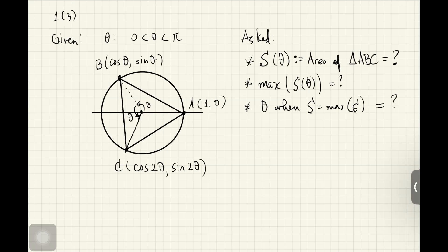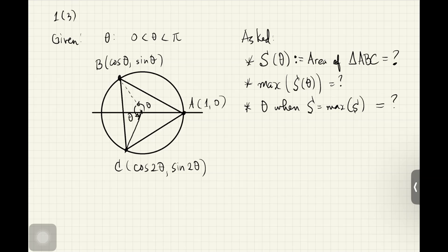That's how B is determined. We are also told that theta must be greater than 0 and less than pi, which means point B can only be on the upper half of the unit circle. Then there's another point C, and we are told that C makes a central angle of 2 theta.